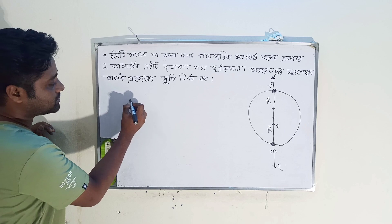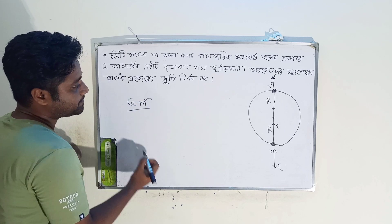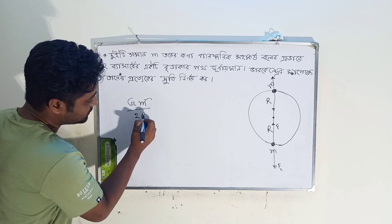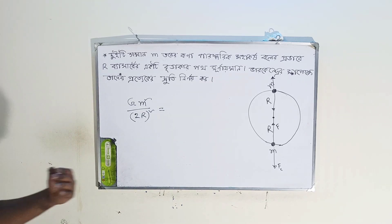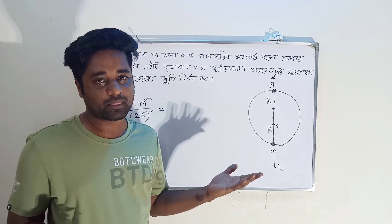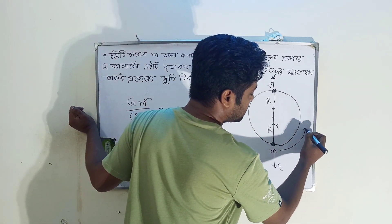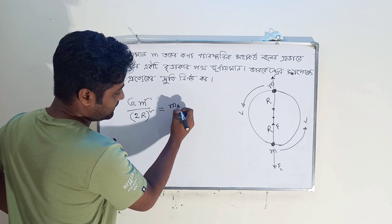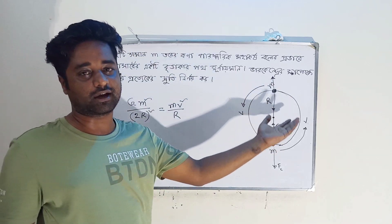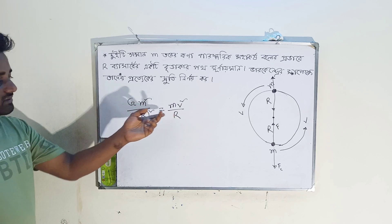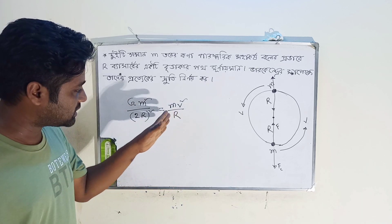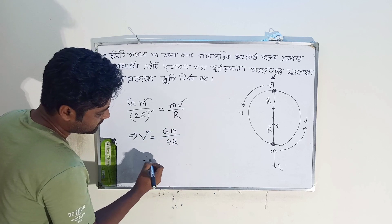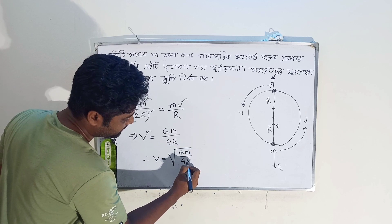So we have to focus on M. We have to focus on Gn² by the distance. That means we have to focus on Fc. So Fc is a centripetal force. Fc equals gm by 4r. So v is equal to root over gm by 4r.